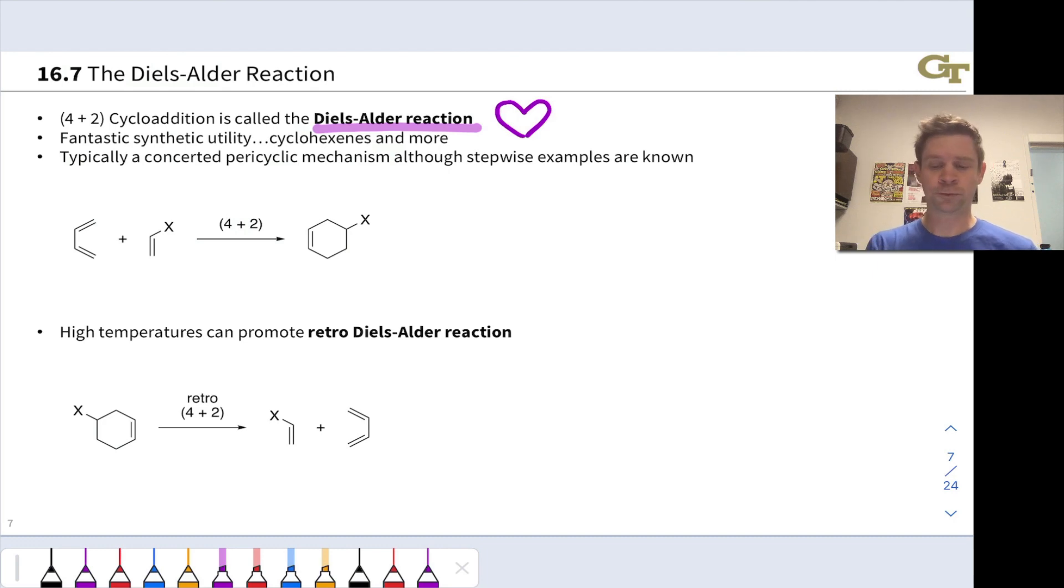In the language we've developed so far, the Diels-Alder reaction is a 4 plus 2 cycloaddition involving a 4 pi component, a pi system consisting of 4 atoms, a conjugated diene as we've described them previously, and a 2 atom or 2 pi component, which can be as simple as a carbon-carbon double bond, for example, in ethylene.